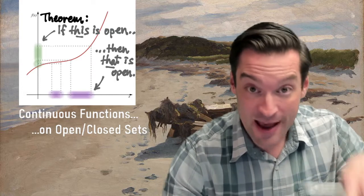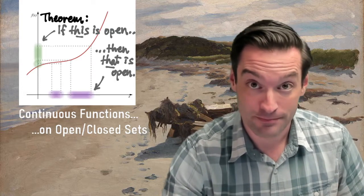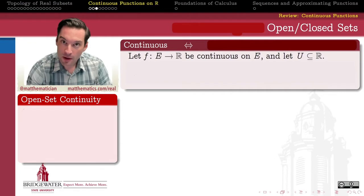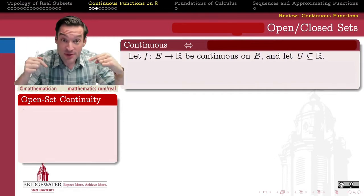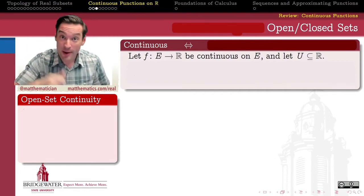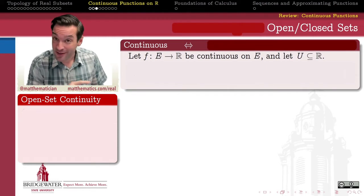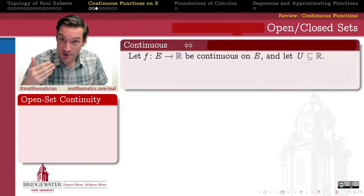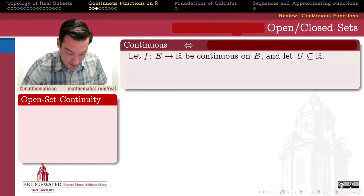Let's establish this fact to get us onto a firm foundation for what's coming. If you haven't seen the previous video on the open set definition of continuity, you'll want to go back and review that. That's going to be the way in which we understand what it means for a function to be continuous in this video. As you'll see, that understanding is going to make the theorem we're about to establish come pretty quickly.